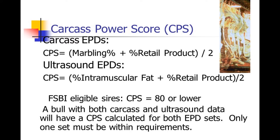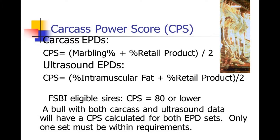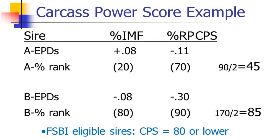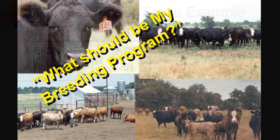You can do the same thing with carcass traits. Breed associations provide EPDs for progeny marbling and retail product — yield grade, how lean the product is. You can get intramuscular fat data from the packing plant or via ultrasound. Plug carcass trait EPDs into a power score to decide what you want. For example, Bull A's percentile rank for intramuscular fat versus Bull B at 80% — a 20th percentile means higher intramuscular fat. You can use these power scores to select your bulls.